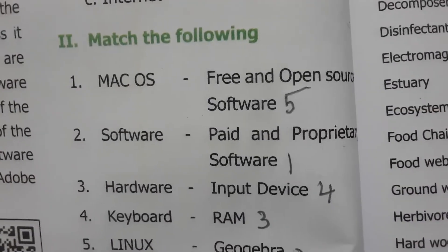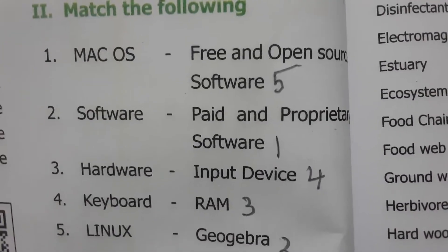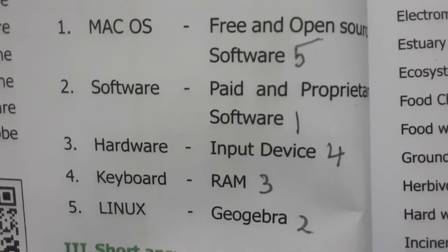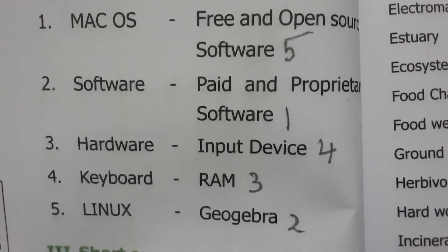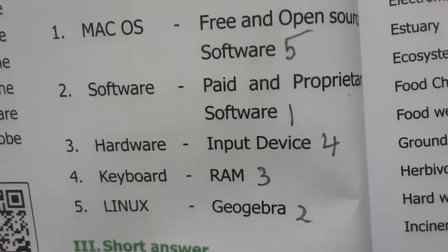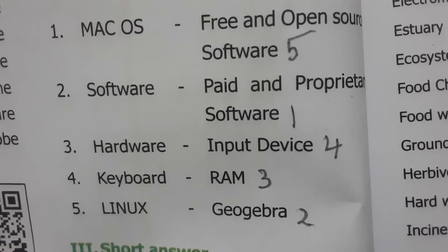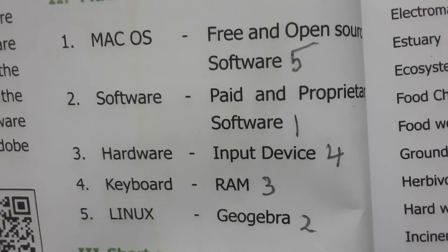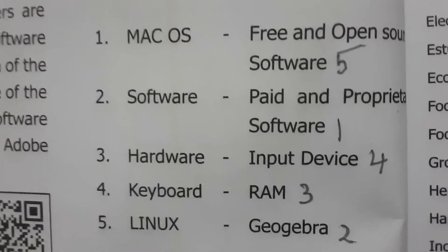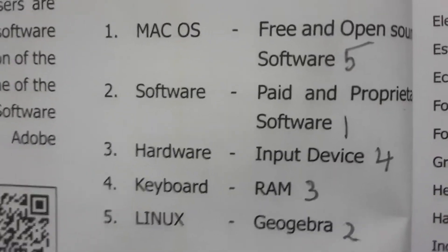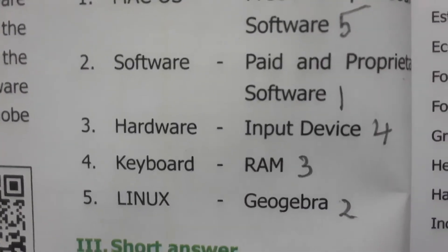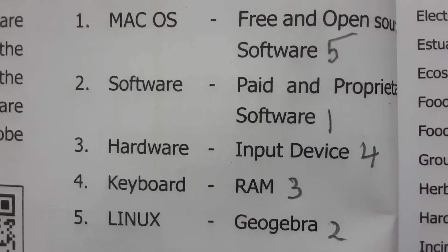Android is an operating system. macOS is a paid and proprietary software. Softwares are generally of various types. Hardware includes RAM and keyboard. Keyboard is an input device — whatever we want to input into the computer, we do so through the keyboard. Linux is a free and open source software.